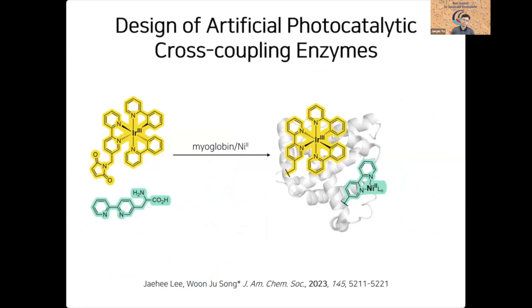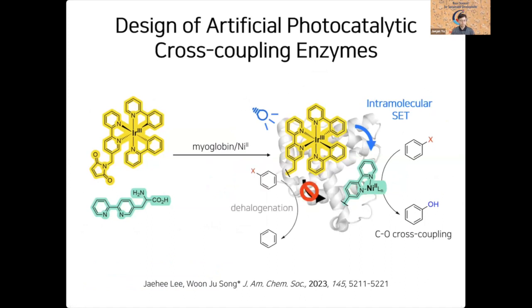Thus, we designed an artificial metalloenzyme by synthetically and genetically introducing two catalysts into a protein called myoglobin. Then we propose that blue LED light can activate the iridium-based catalysts, subsequently transferring electrons into the nickel catalysts. Then the latter can conduct a cross-coupling reaction, making a new carbon-oxygen bond under ambient conditions in aqueous solution. If this intramolecular single electron transfer is not efficiently mediated, we might be able to see the formation of dehalogenated products.